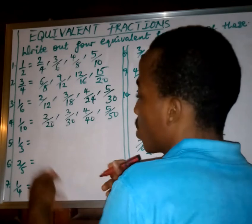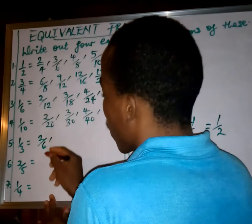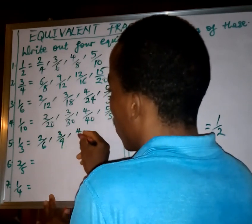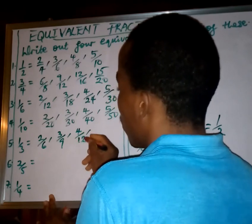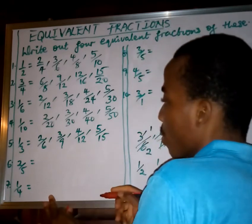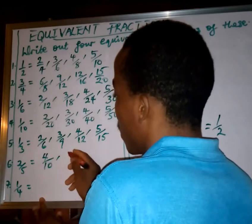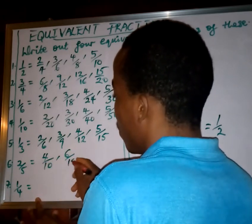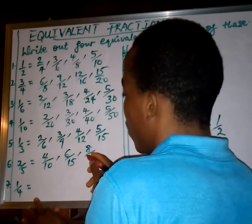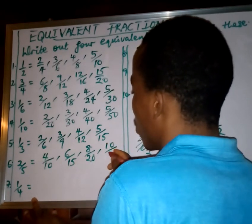For 1 over 3: multiply by 2 — 2 times 1 is 2, 2 times 3 is 6. Multiply by 3 — 3 times 1 is 3, 3 times 3 is 9. Multiply by 4 — 4 times 1 is 4, 4 times 3 is 12. Multiply by 5 — 5 times 1 is 5, 5 times 3 is 15. For 2 over 5: multiply by 2 — 2 times 2 is 4, 2 times 5 is 10. Multiply by 3 — 3 times 2 is 6, 3 times 5 is 15. Multiply by 4 — 4 times 2 is 8, 4 times 5 is 20. Multiply by 5 — 5 times 2 is 10, 5 times 5 is 25.